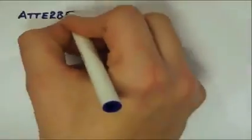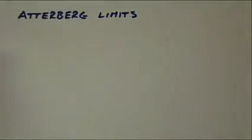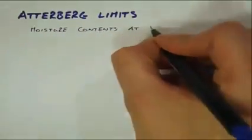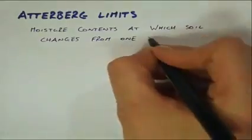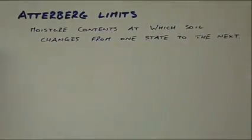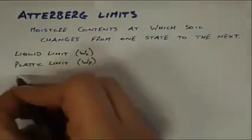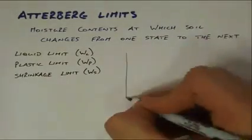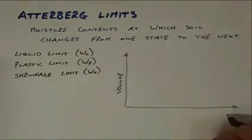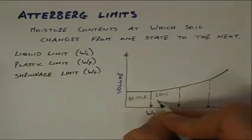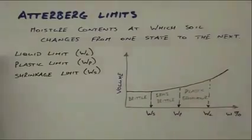If, however, the soil contains silt and clay, then additional tests known as the Atterberg limits must be performed to complete the classification. The Atterberg limits are simply moisture contents at which the soil changes consistency, or moves from one state to the next. There are three Atterberg limits: the liquid limit WL, the plastic limit WP, and the shrinkage limit WS. These moisture contents define when a soil transitions from being a liquid to a plastic, and finally a brittle material as it dries.